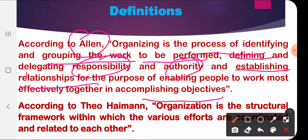In accomplishing objectives, the relationships also need to be defined. The superior should be aware of whom he gives orders to, and the subordinate should be very clear about whom he reports to. This enables people to work most effectively together in accomplishing the common goal of the employees working in the organization.